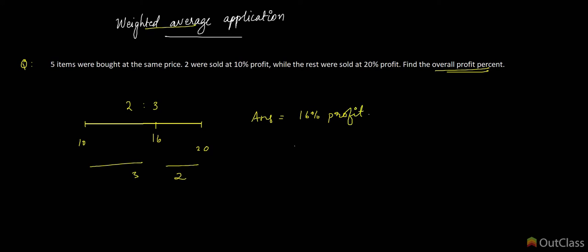Pretty simple. Now, the thing I want to point out here is, if you are putting profit percentages on the number line, what should you put as the corresponding quantity, which is then flipped to give the distance ratio?